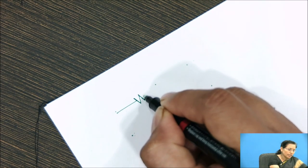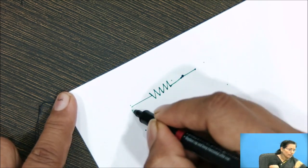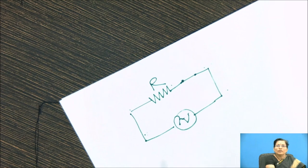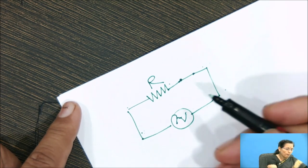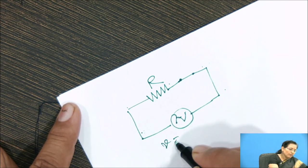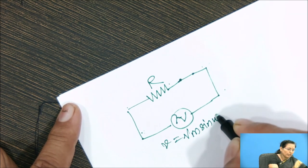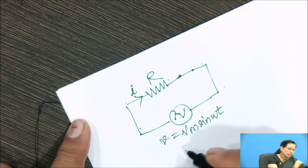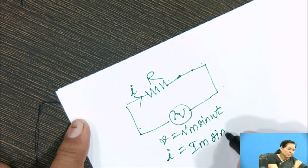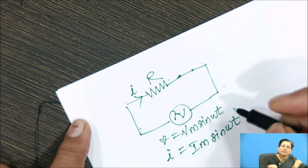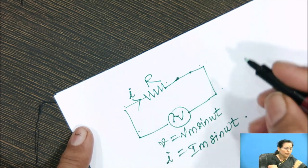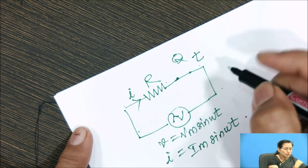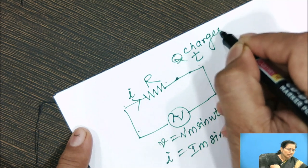Now consider this resistive circuit. Connect the AC voltage to that circuit for which we want to measure the average value. So this is the AC voltage V equal to Vm sin omega t. Connect that voltage to this resistive circuit. I current flows through this, I is given by Im sin omega t. So when this I current flows through this circuit, Q charges move through the circuit in time t. So we have to measure this Q charges in time t.